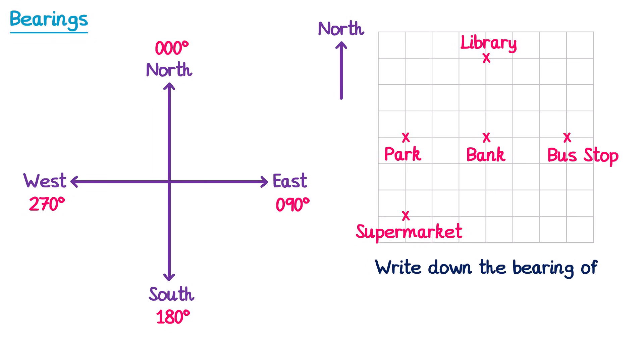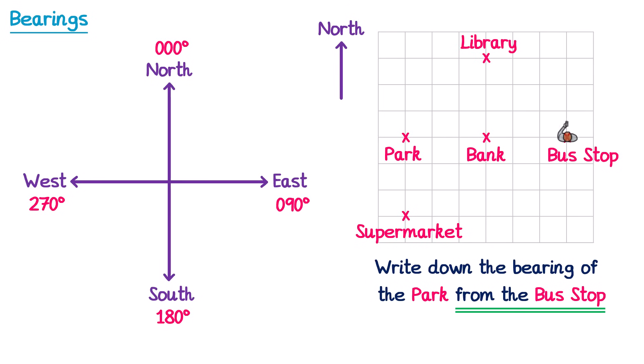Let's try another one. This time we're going to find the bearing of the park from the bus stop. Since it says from the bus stop, we must imagine we're stood at the bus stop. We face in a north direction and turn clockwise until we face the park. So even though turning anti-clockwise would be faster, the second rule of bearings is that they must go clockwise. So if we turn in a clockwise direction until we face the park, you can see we've done three quarters of a turn, or 270 degrees, which is the answer to that question.